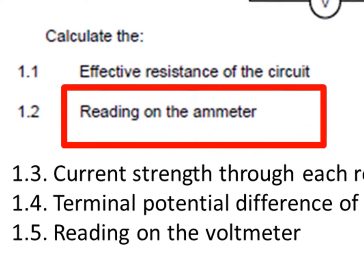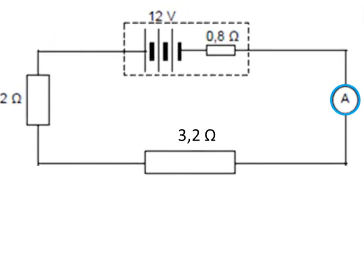Now we're asked what the ammeter reading is. We notice that the ammeter is in the main part of the circuit. That tells us that this ammeter measures I main, which we could also call I total — the total current passing through all points in the series circuit, or rather in the series equivalent of the circuit.